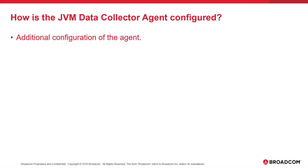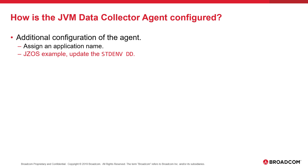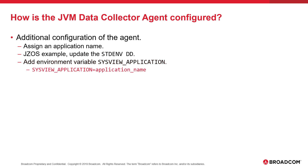There is some additional JVM Data Collector Agent configuration that should be covered. Since many JVMs can look very similar from the outside, it may be helpful to assign an application name to the JVM so the application can be easily identified on the JVM List display. In our JSOS example, to add an application name, update the standard environment DD. The application name is created by adding an environment variable called SYSVIEW_APPLICATION and setting it to a value of your choosing.